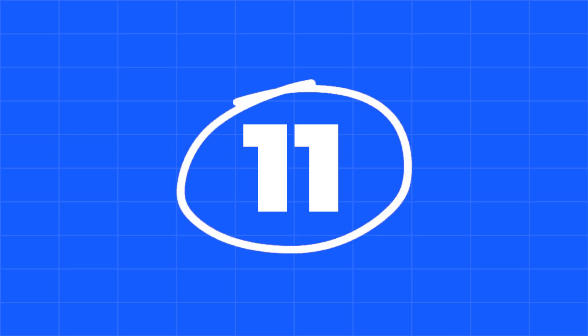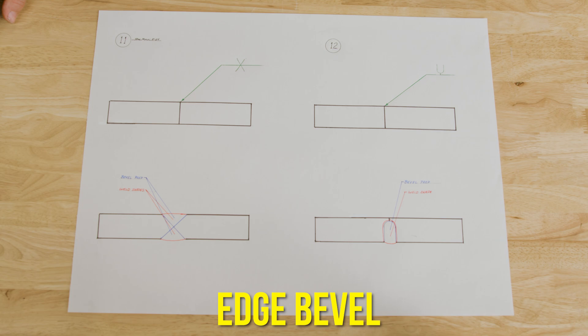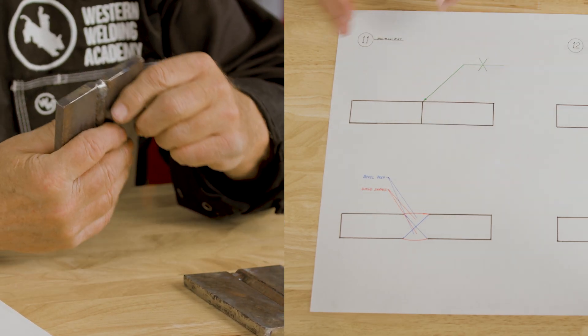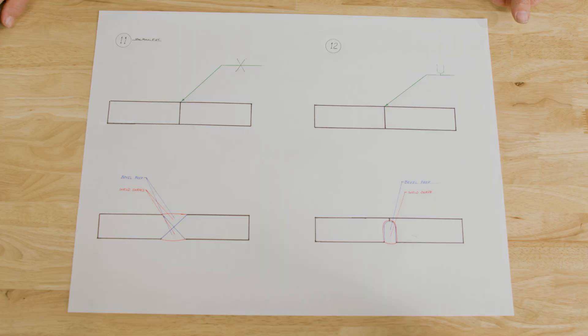Number 11 is essentially a double bevel. Again, it's an edge bevel. You'll have both sides are beveled, but instead of being a T situation, it's edge. Again, you do a very good penetration weld. And it also,